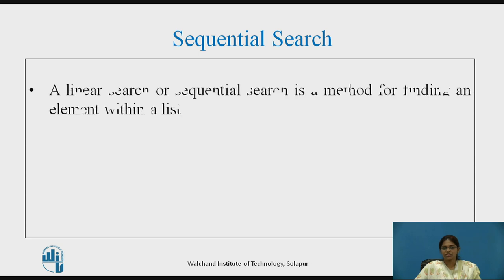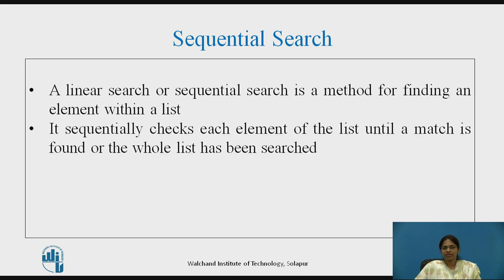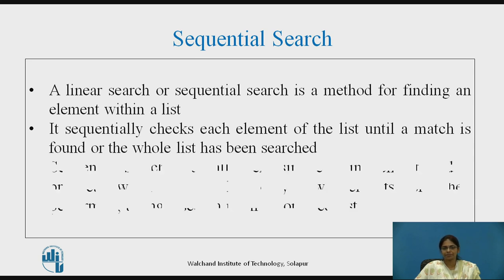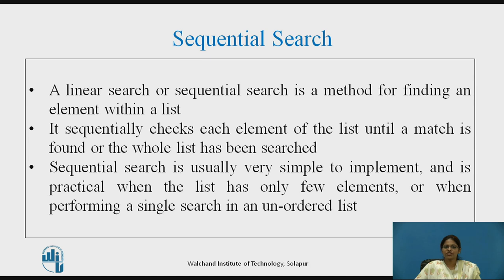Sequential Search: A sequential search or linear search is a method for finding an element within a list. Given a list of elements, it sequentially checks a target element with each element of the list until a match is found or the whole list has been searched. It is usually very simple to implement and is practical when the list has only a few elements, or when performing a single search in an unordered list.